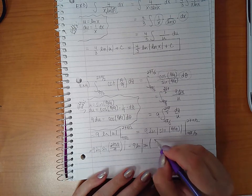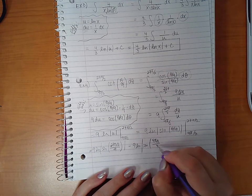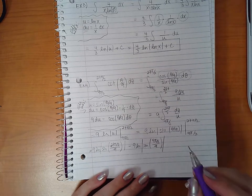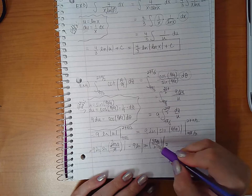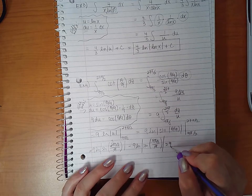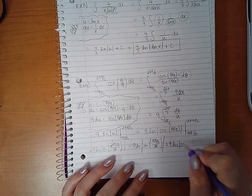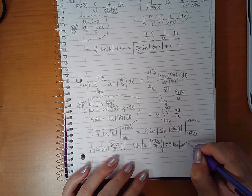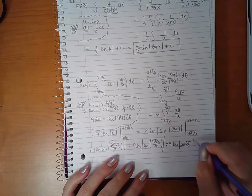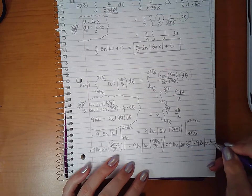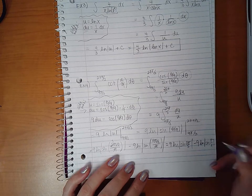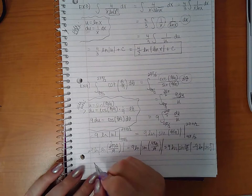This goes into there three times, this goes in there once. So we end up with 9 ln sine of 3 pi over 2 minus 9 ln of sine of pi over 2. If we evaluate, let's look at the unit circle.